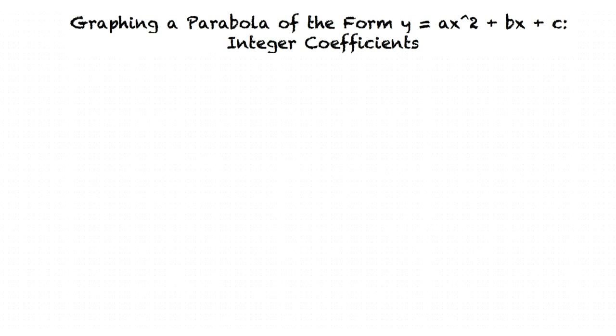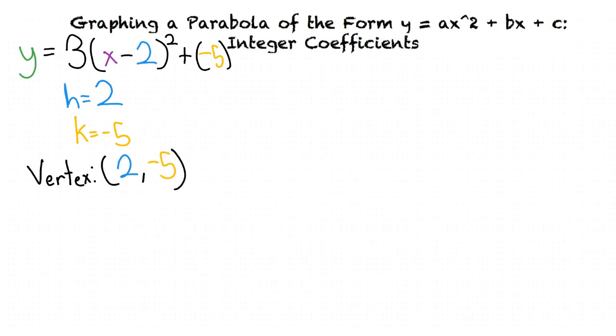Now that we have found our new form, what do we do from here? Remember that a parabola in the form a(x minus h)² plus k has a vertex of (h, k). If we look at our problem, we can see that our h is 2 and our k is negative 5. This means that the vertex of our parabola is located at (2, negative 5).